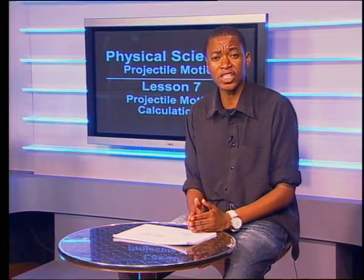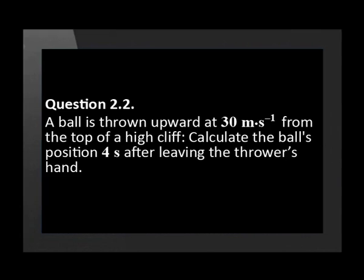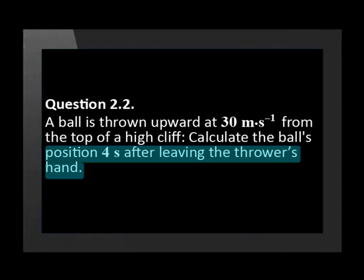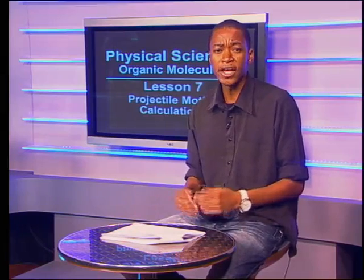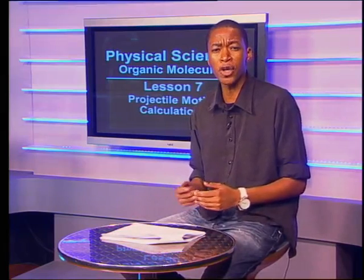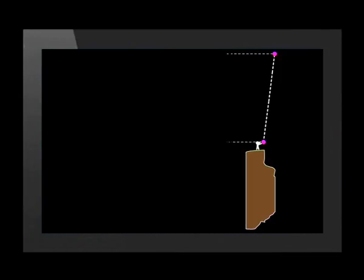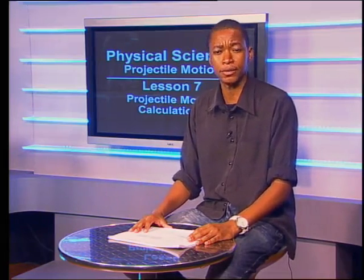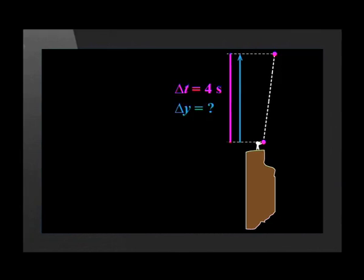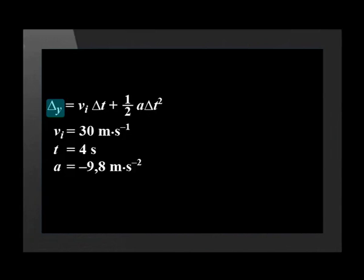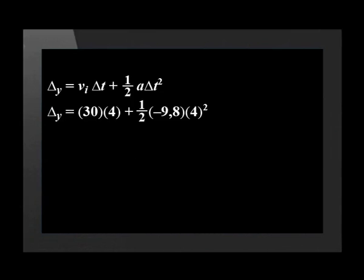You might think the questions all look similar, but each one has something different that we need to be careful about. Next, we calculate the ball's position four seconds after it leaves the hand. We don't know whether the ball is still moving up or has started moving down by this time, so we're not sure how to draw our diagram — but we may need to change it as we find out more. This equation contains the unknown we are asked to calculate: displacement.